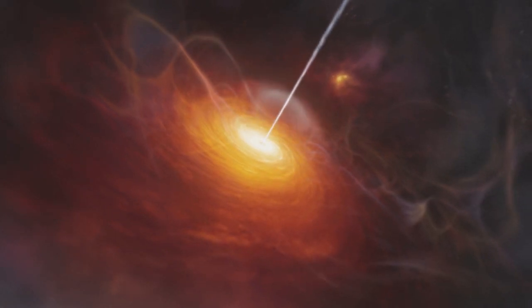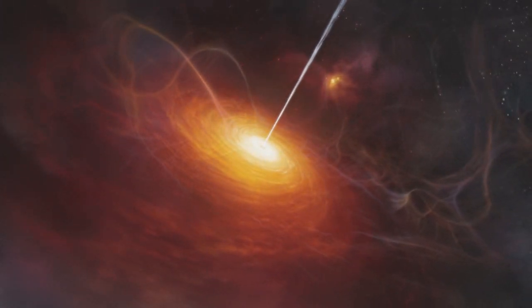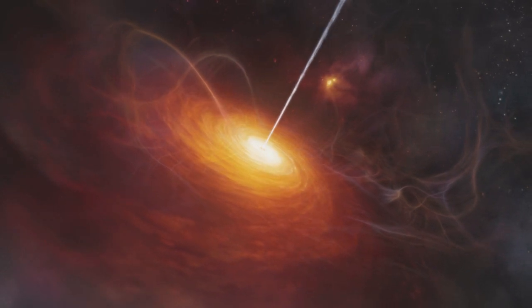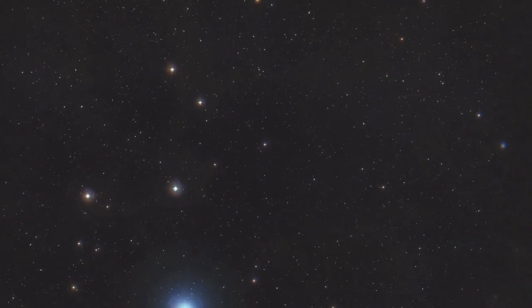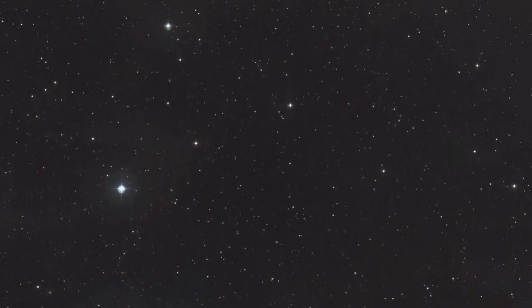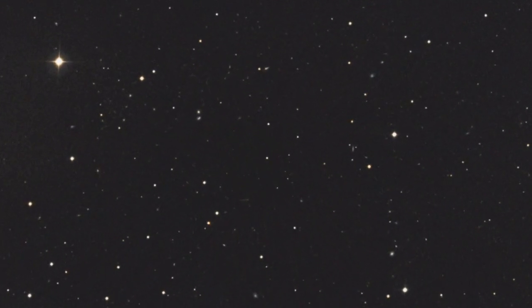By studying this blazing beacon in detail, the scientists have found that we are seeing this quasar at a time when the Universe was just 770 million years old. This means that the light from the quasar took 12.9 billion years to reach us. Never before has a brighter object been observed this far back into the early Universe.